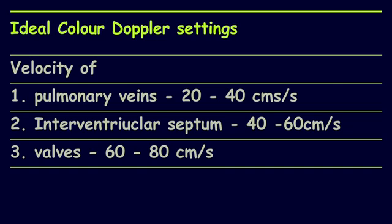We all use color Doppler during fetal echo, but the ideal velocity setup for better visualization is important. To visualize pulmonary veins, bring the PRF down to 20–40 cm/s, or use power Doppler or HD flow. To visualize the interventricular septum, keep the velocity between 40–60 cm/s; otherwise wall movement will also be picked up. To assess valvular stenosis, set the velocity between 60–80 cm/s. As a rule of thumb, any velocity up to 100 cm/s is considered normal; above 100 cm/s requires caution, and above 120 cm/s is diagnostic of valvular stenosis.